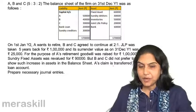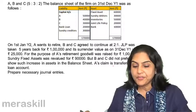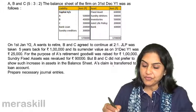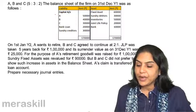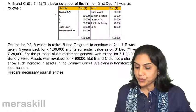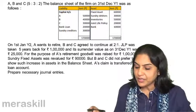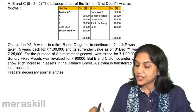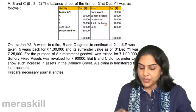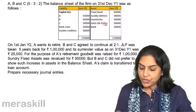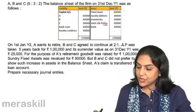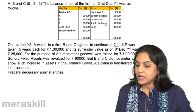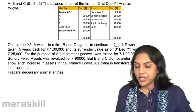A complete problem covering all aspects of retirement. A, B and C share profits and losses in the ratio 5:3:2. The balance sheet of the firm is given with capital, bank loan, creditors, fixed assets, debtors, inventories, a joint life policy and bank. On 1st January of year 2, A wants to retire, and B and C agree to continue in the ratio 2:1. So there is a change in the profit sharing ratio.